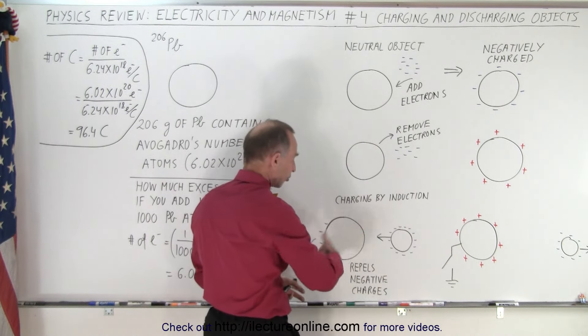The repulsive force of the extra charge would be enormous — it would actually be pretty difficult to keep them on that little lead ball. But that gives you an idea that only one electron for every 1,000 atoms on the lead ball would result in an enormous charge being placed on it. So it doesn't take a lot of electrons to build up a lot of charge on an object.